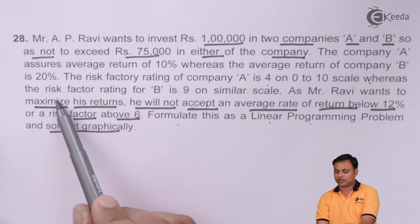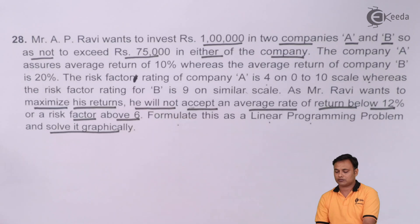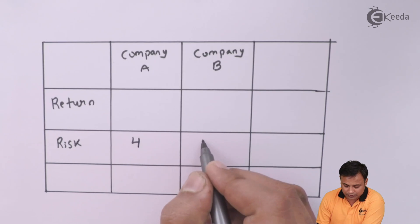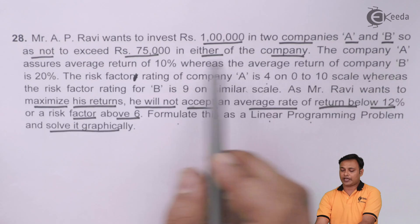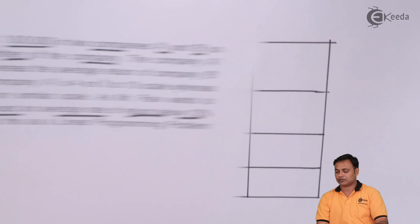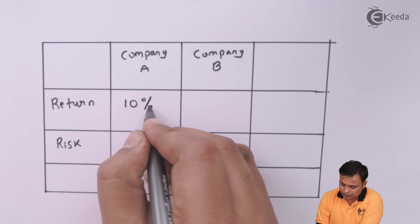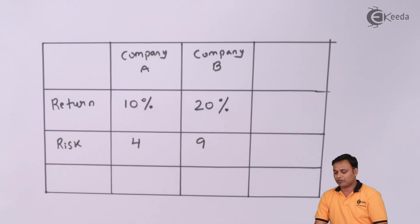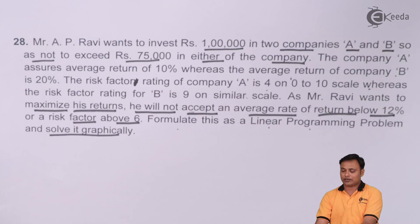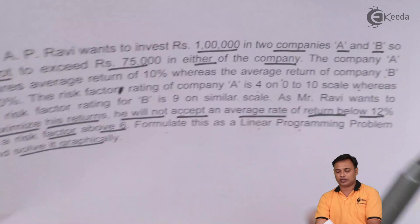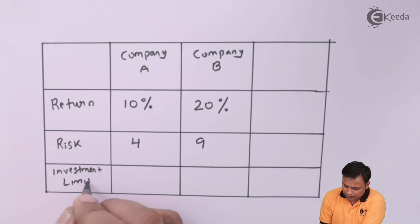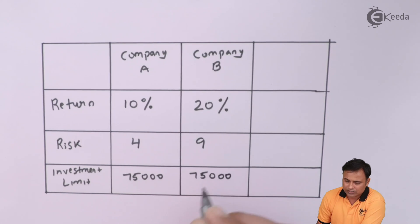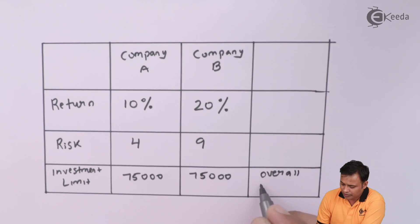The risk factor rating of company A is 4, and for company B it is 9, on a scale of 0 to 10. Company A assures an average return of 10 percent, and company B gives 20 percent. The investment limit is 75,000 in company A and 75,000 in company B, with an overall limit of 1 lakh rupees.